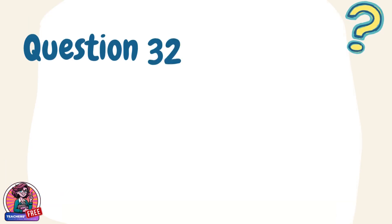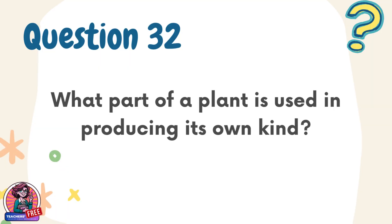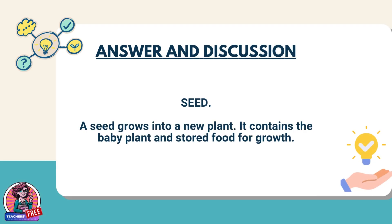Question 32. What part of a plant is used in producing its own kind? Answer: Seed. A seed grows into a new plant. It contains the baby plant and stored food for growth.